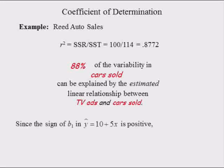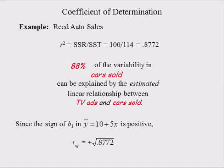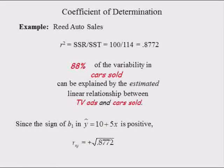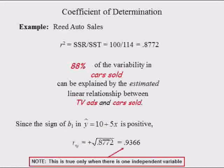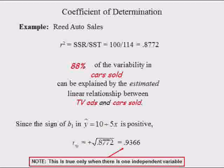Since the sign of B1 is positive, the correlation coefficient equals the positive square root of the coefficient of determination, which in this case is 0.8771, and equals 0.9366. Note that the correlation coefficient equaling the positive square root of the coefficient of determination only holds when there is one independent variable, which is the case in simple regression but not in multiple regression.